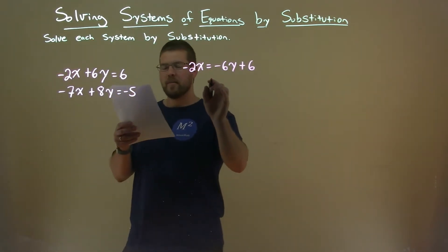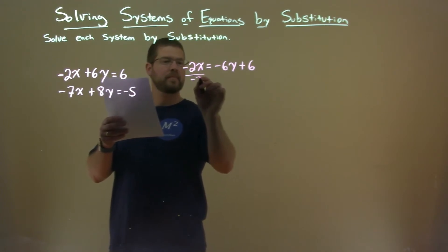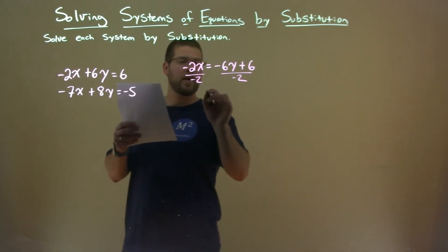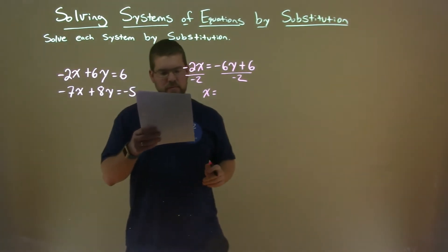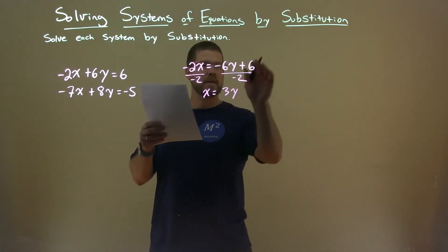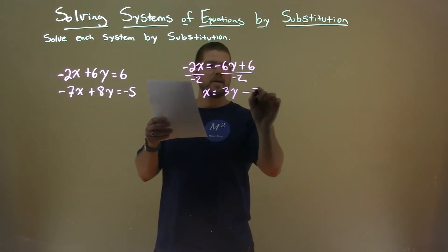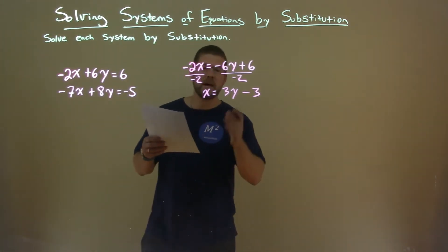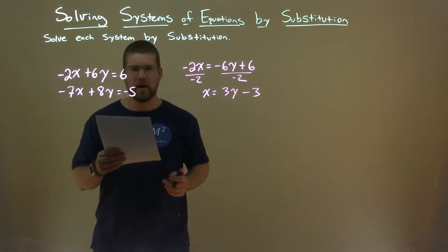Now I can divide both sides by negative 2. And we're left with x by itself equals, well, negative 6y divided by negative 2 is a positive 3y. 6 divided by negative 2 is negative 3. So we have x by itself equal to 3y minus 3.